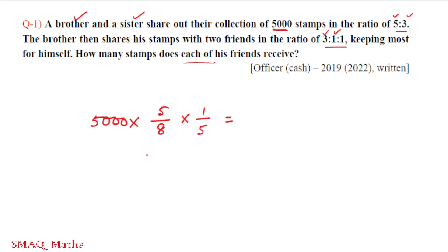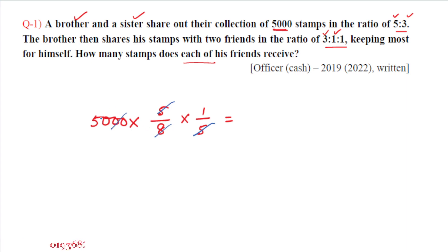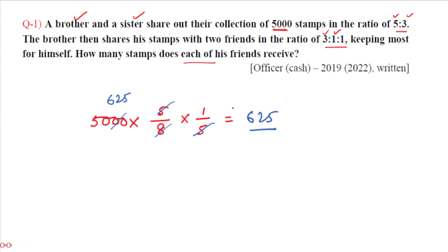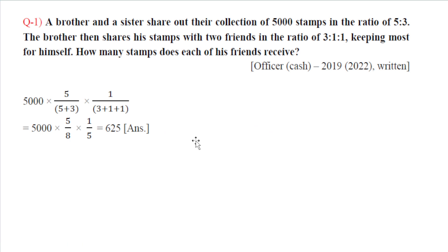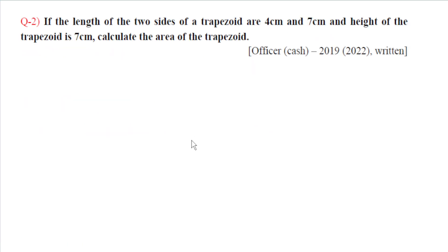Simplifying the calculation: the fives cancel, and dividing 5,000 by 8 gives 1,000 divided further. Each friend's share calculates to 625 stamps. So the answer to question one is 625 — each of the brother's friends receives 625 stamps.